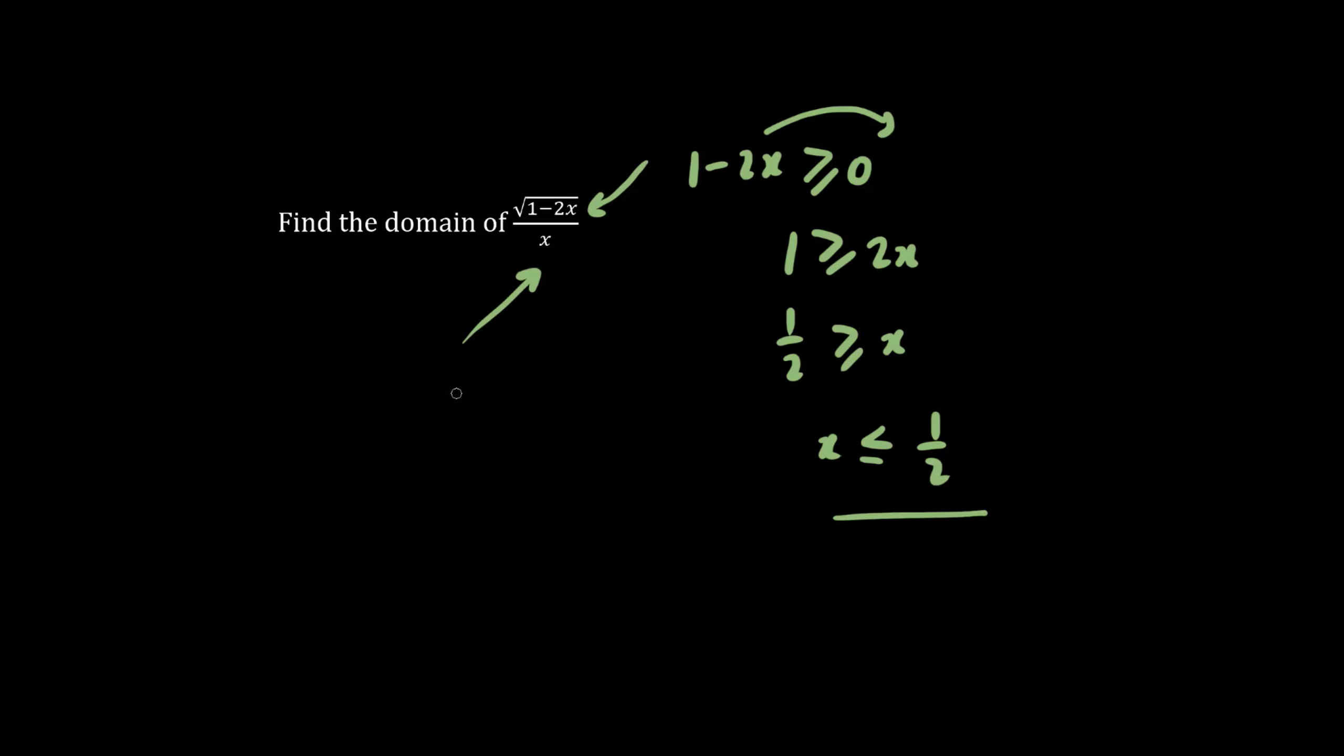The other rule is that we can't divide by 0. So thus x does not equal to 0.